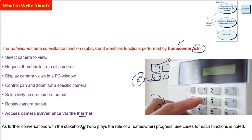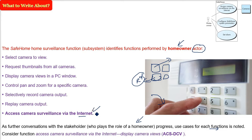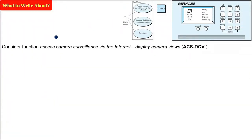Let us take an example of the last identified function: access camera surveillance via the internet. Let us name it ACS_DCV — ACS for access camera surveillance and DCV for display camera views. This is the function we are talking about and we are going to make a use case out of it. We will have a conversation with the user to find out the order and sequence of user actions.